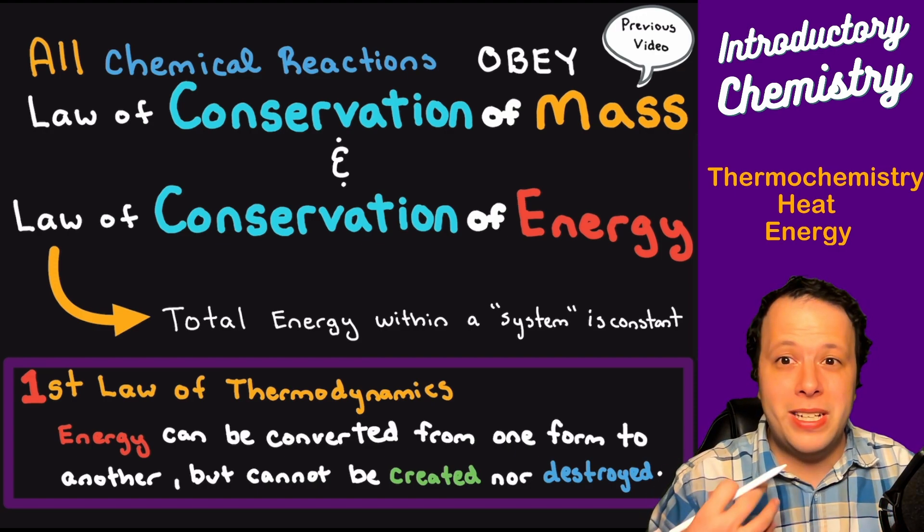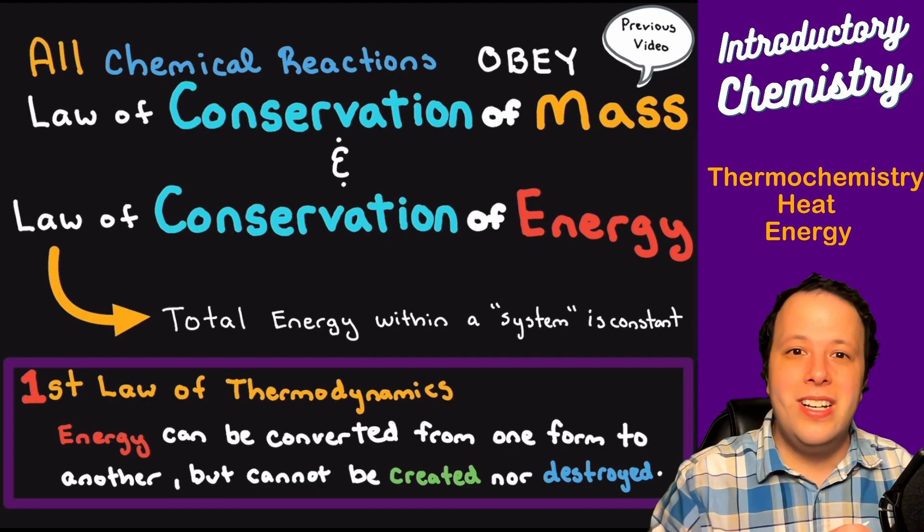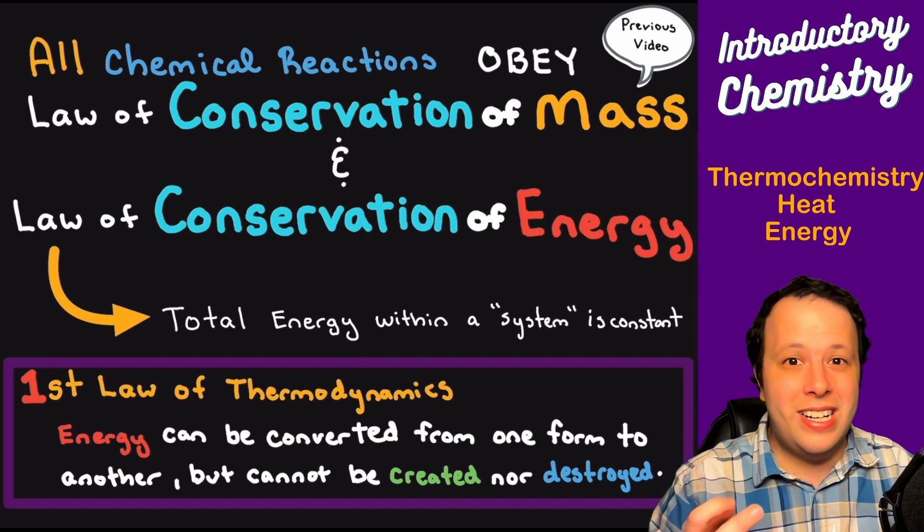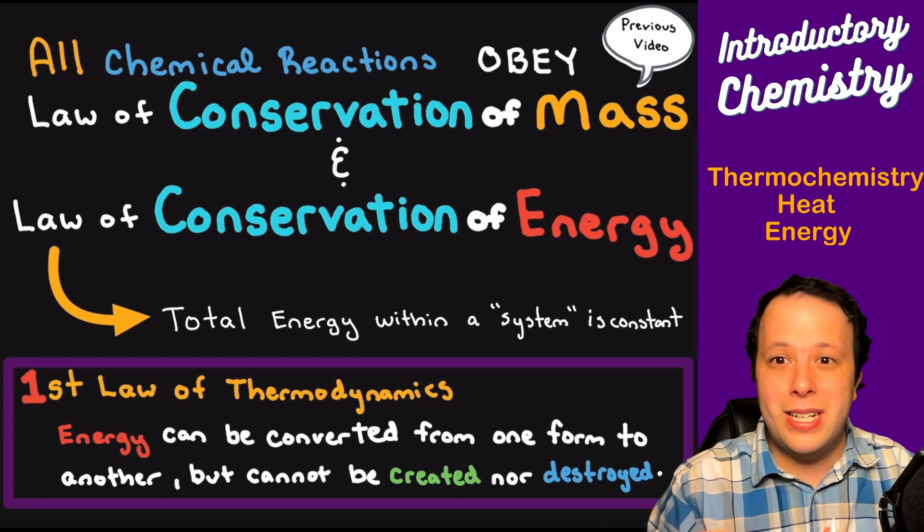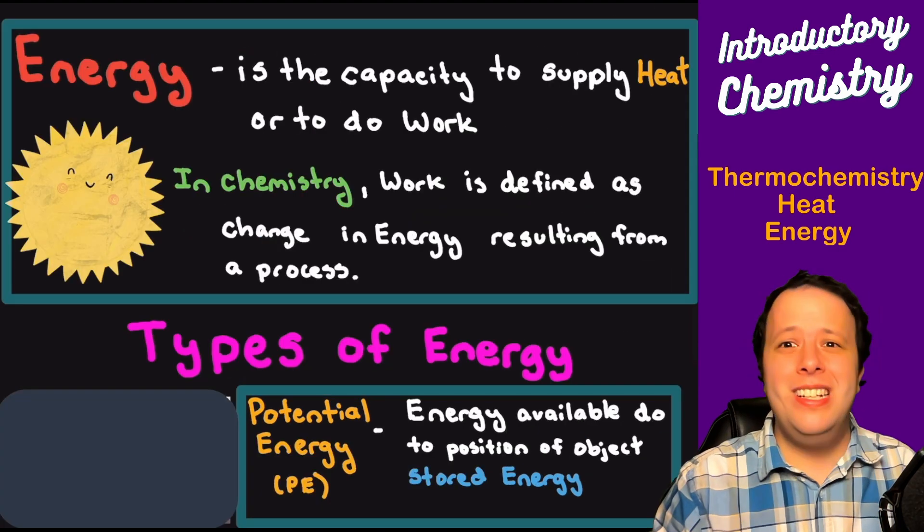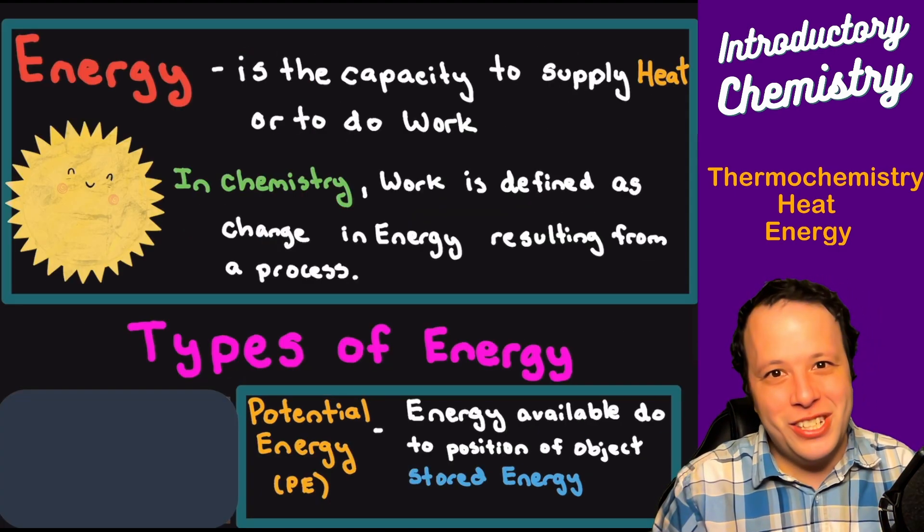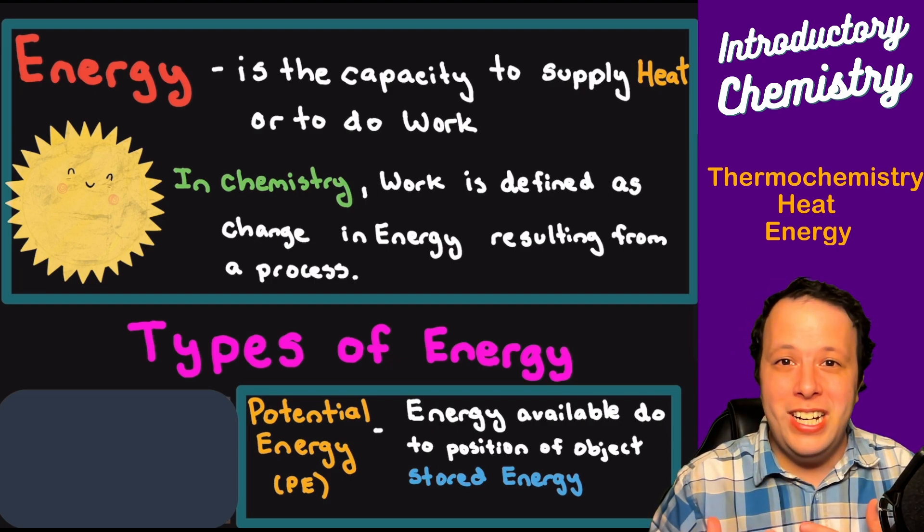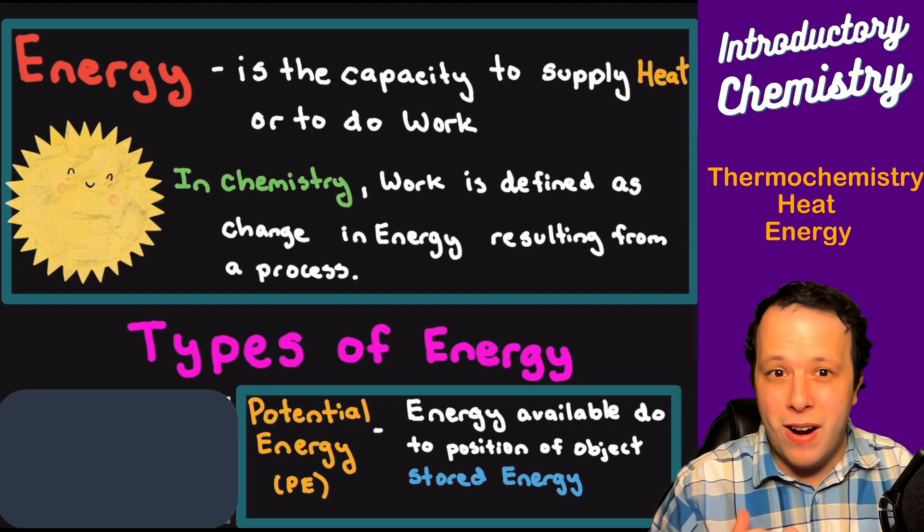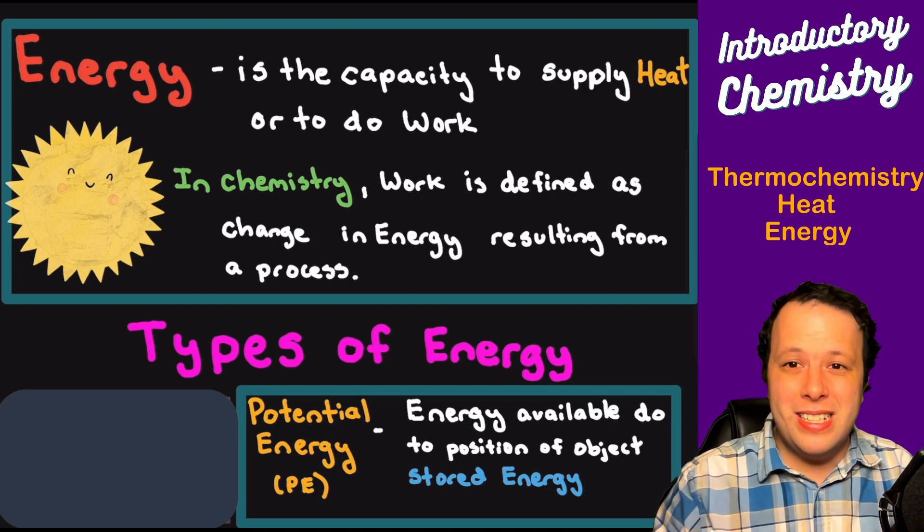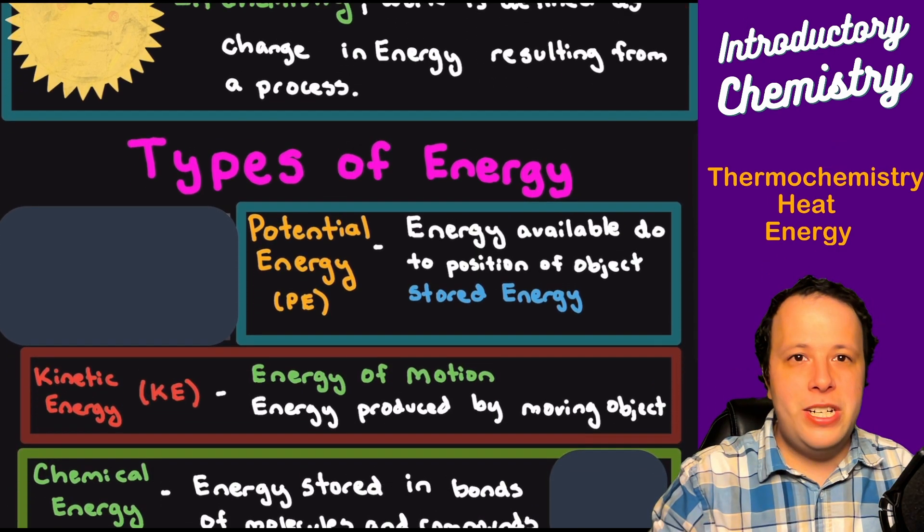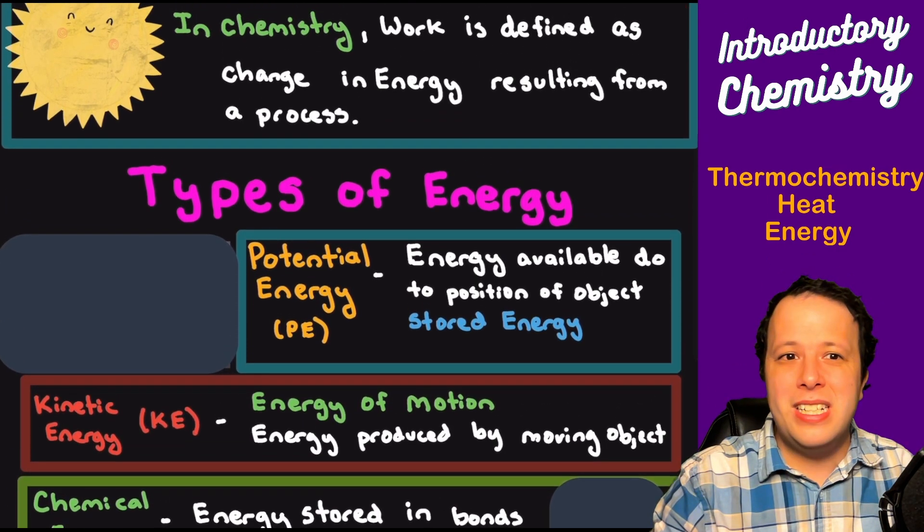Energy can come in many different forms, and that's what we're going to be looking at—how we can actually measure that and understand it. So let's take a look at the different types of energy. It takes a lot of work to get up there and a lot of energy to do so. In chemistry, work is defined as change in energy resulting from a process. Those processes can occur in many different ways depending on the type of energy.